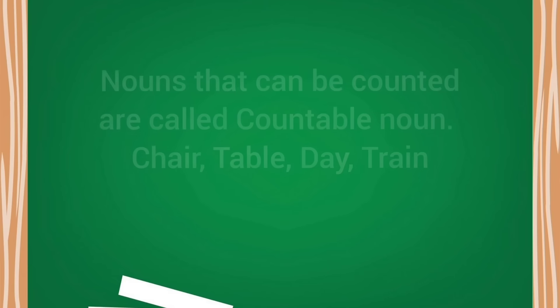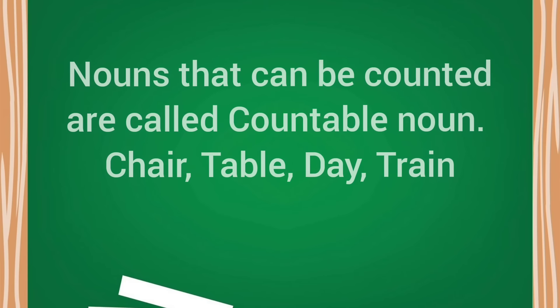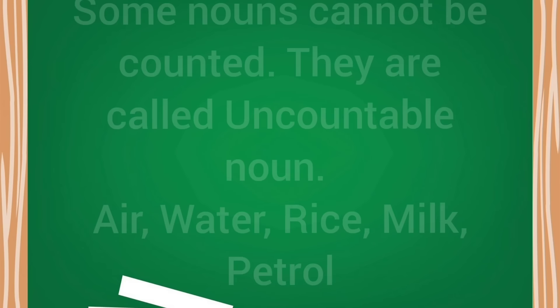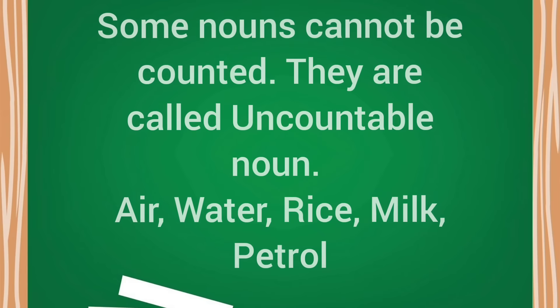Nouns that can be counted are called countable nouns — like chair, table, day, train: a chair, two chairs, one table, three tables like this. But some nouns are also there that cannot be counted. They are called uncountable nouns — like air, water, rice, milk, petrol. You cannot count them; you can only measure them.